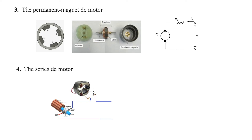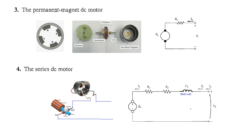The fourth type is the series DC motor, where the field winding is in series so the same current flows through the field winding and then through the armature winding. Because heavy current flows through it, the series field coil uses heavy wire with few turns.